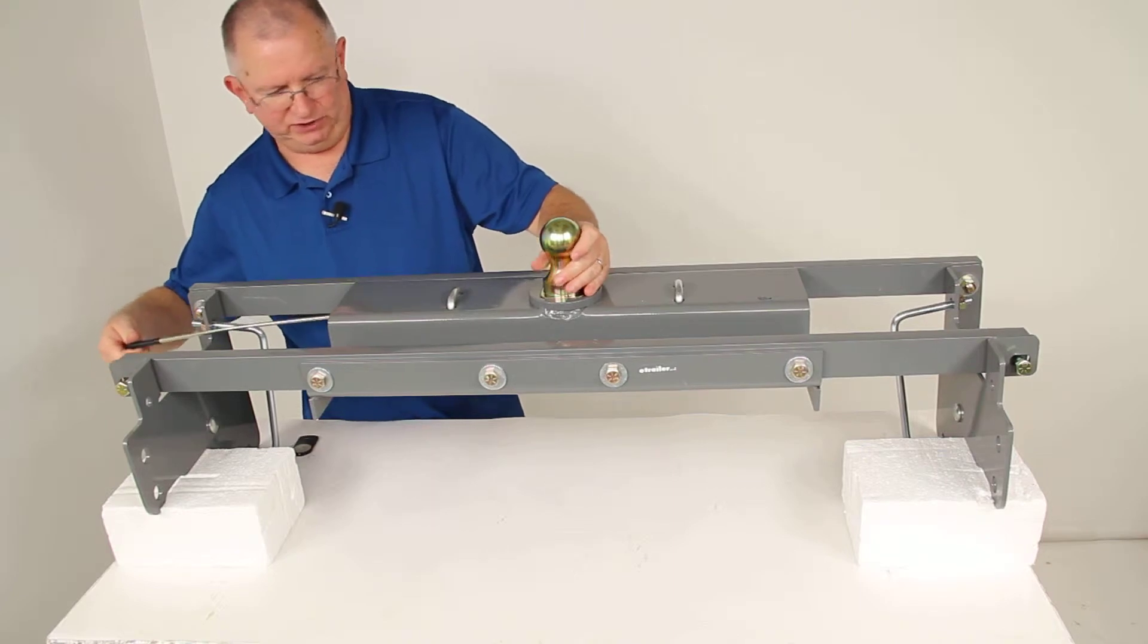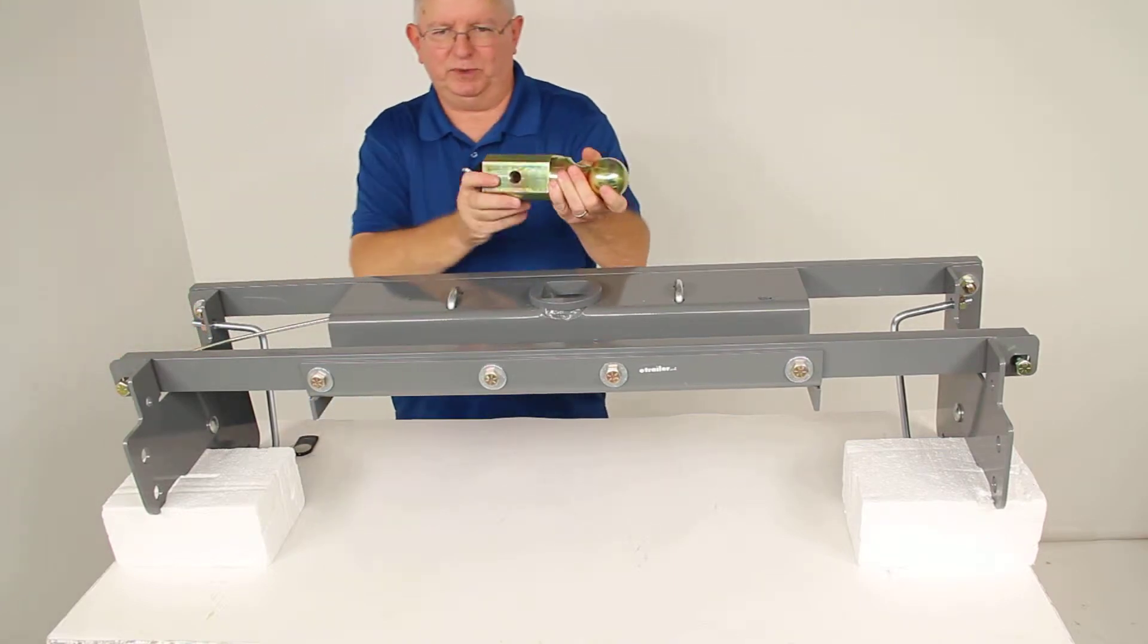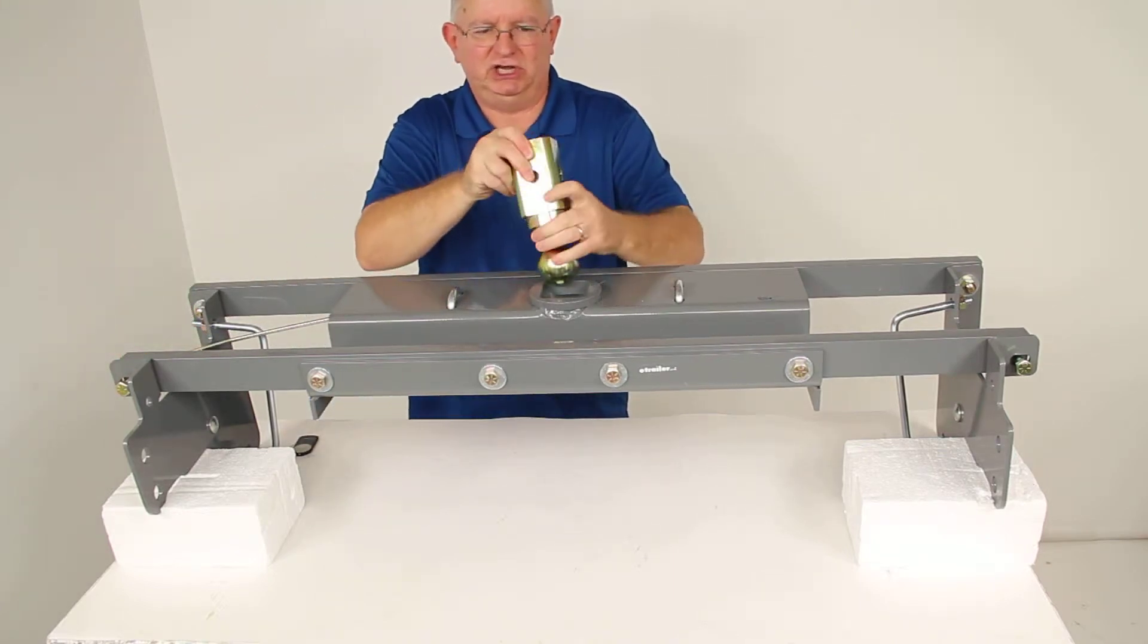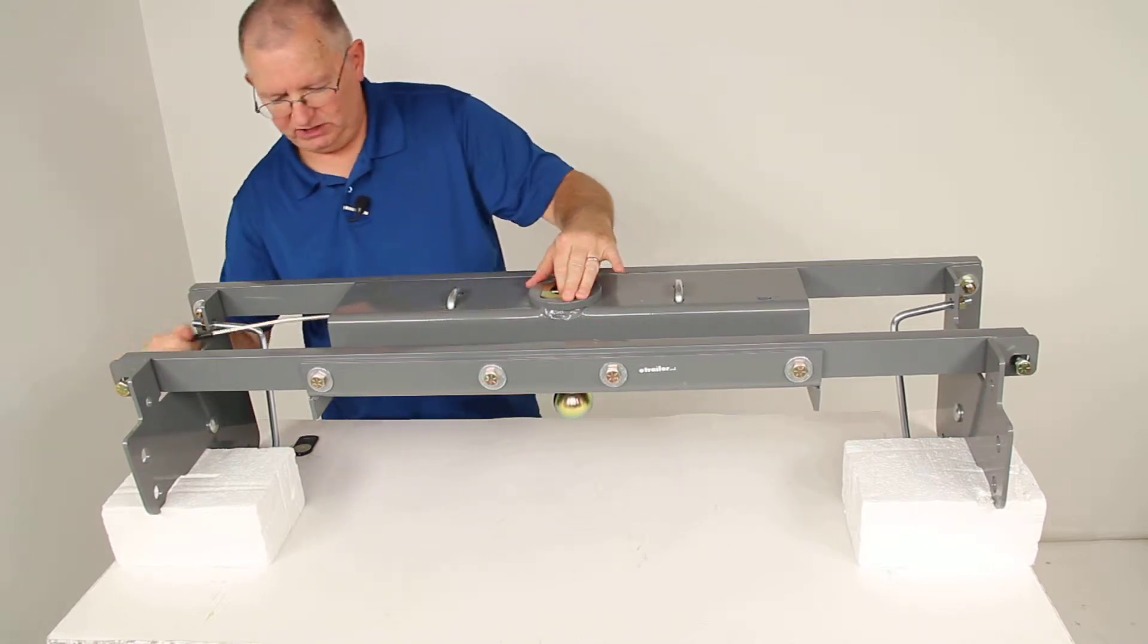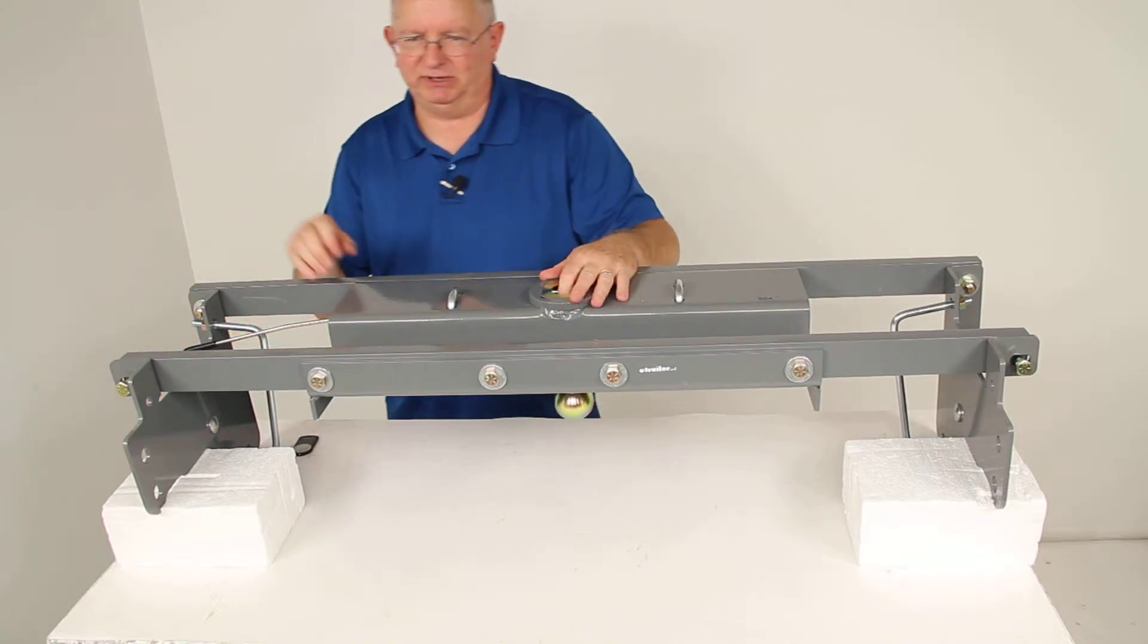All you'd have to do is pull on the handle and twist it. That locks it open. You can remove the ball from the hitch, flip it upside down, drop it back into the hitch, release the handle, and it's locked into place for storage.